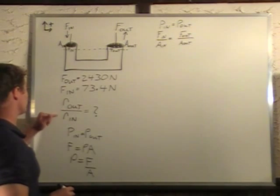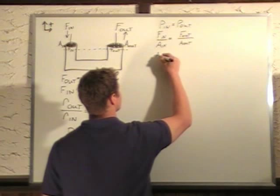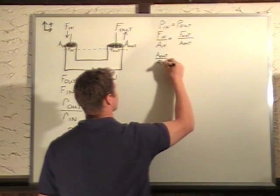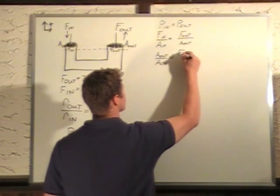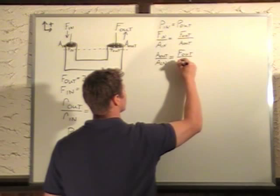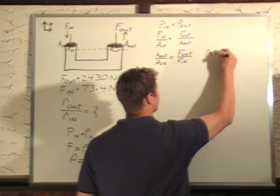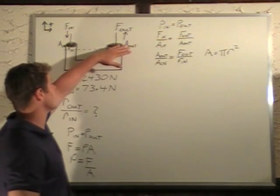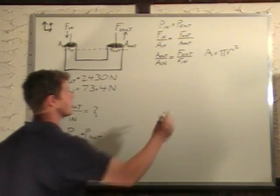So we're looking for R_out over R_in, so I'm going to multiply area out over this side and divide the input force to this side. And we know area is simply equal to π R². This is the area of a circle, the surface area on the bottom. That's π R². So we'll sub that into the areas.